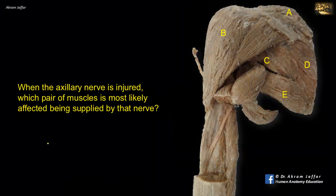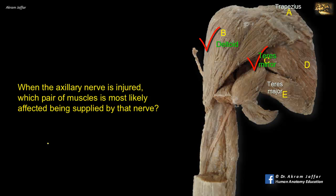When the axillary nerve is injured, which pair of muscles is most likely affected? The axillary nerve is a branch of the posterior cord of the brachial plexus and supplies two muscles: deltoid and teres minor. Muscle A overlies the scapula and is trapezius; B is the deltoid, supplied by the axillary nerve; C is teres minor, also supplied by the axillary nerve. E is the bulkier teres major, supplied by the lower subscapular nerve, and D is infraspinatus, supplied by the suprascapular nerve.